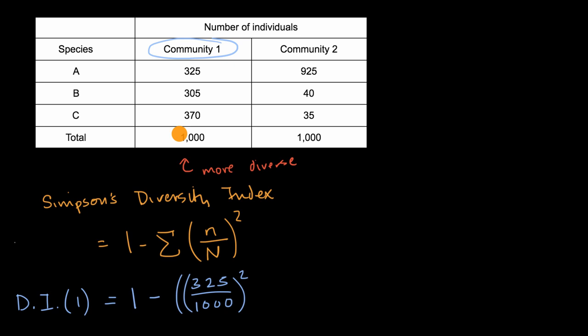Remember, we're gonna sum on each of these species, plus 305, 305 over 1,000, squared, plus 370 over 1,000, squared. And I need to close my parentheses.